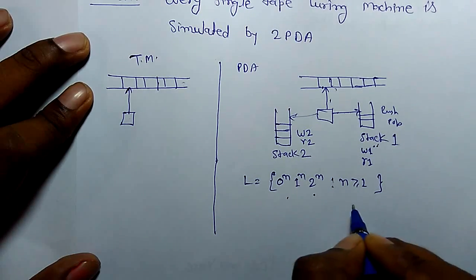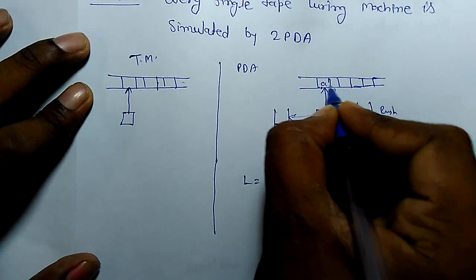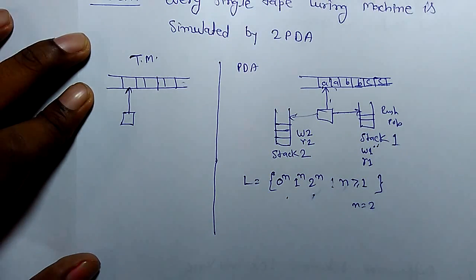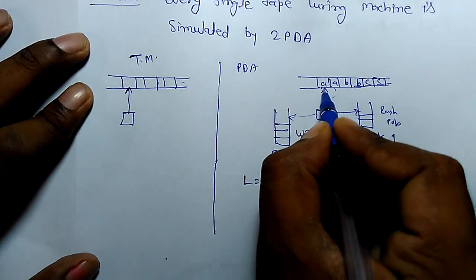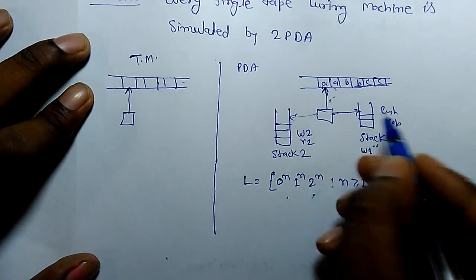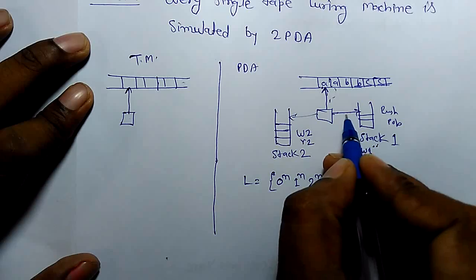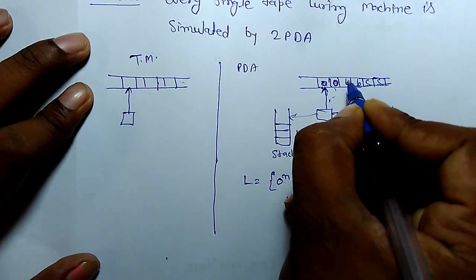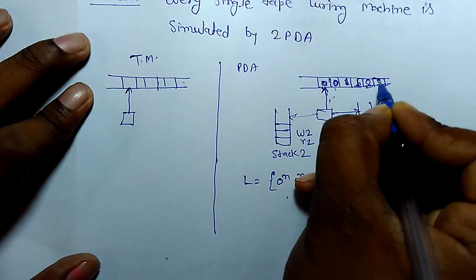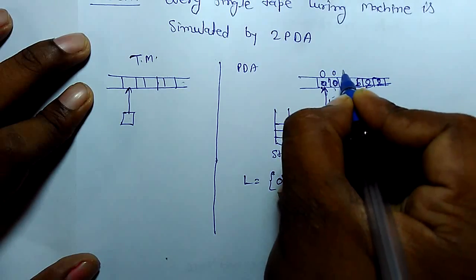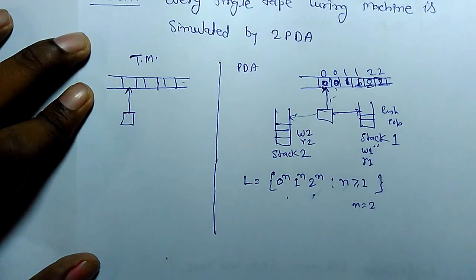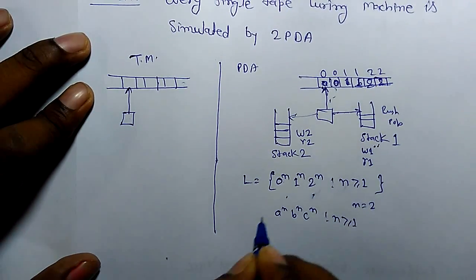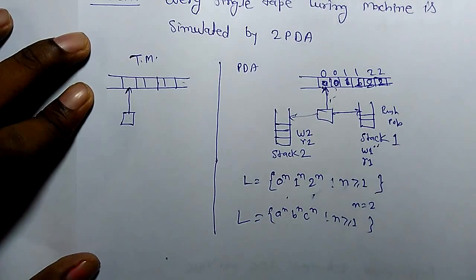Let's take n = 2. So the string would be 0, 0, 1, 1, 2, 2. The first operation: if you read 0 and the top of stack 1 is Z0 (bottom of stack), you push 0. Again read 0 and push it. We can also check the equivalent case for a^n b^n c^n, but both are similar except the symbols are changed.